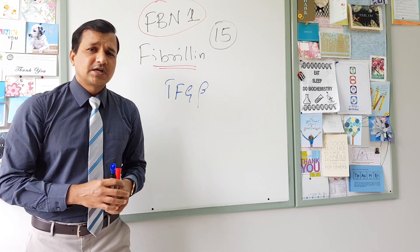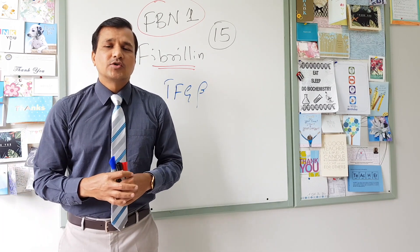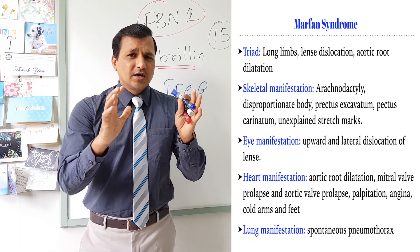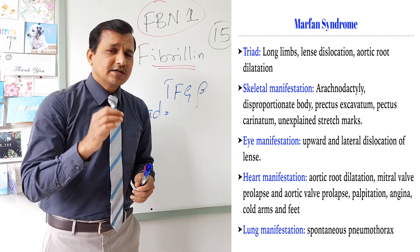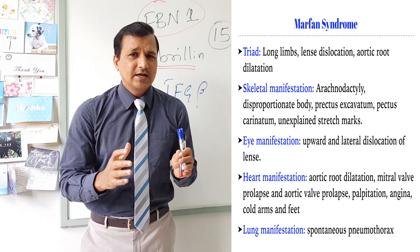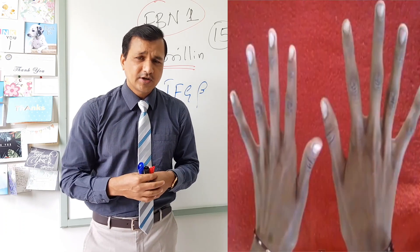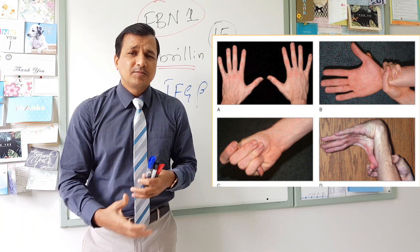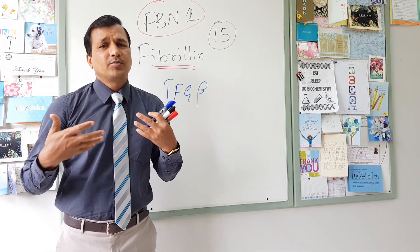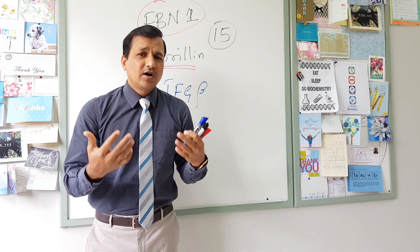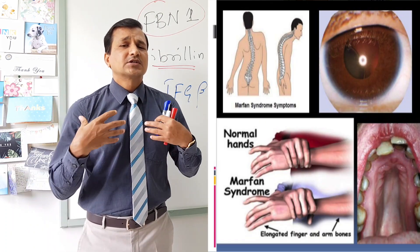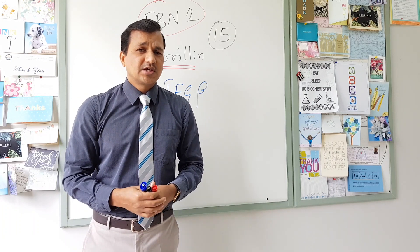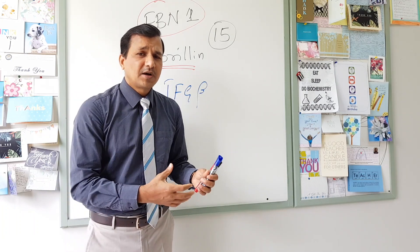The triad of Marfan syndrome includes long limbs, dislocated lens, and aortic root dilatation. In the skeletal system, patients show arachnodactyly — long slender fingers — a disproportionate body with altered upper-to-lower limb ratio, high arched palate, pectus carinatum or pectus excavatum (indentation or protrusion of the chest), and unexplained stretch marks.